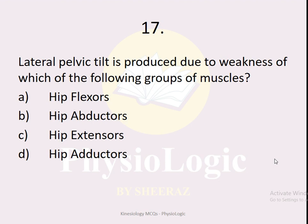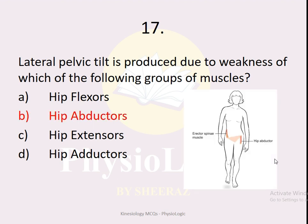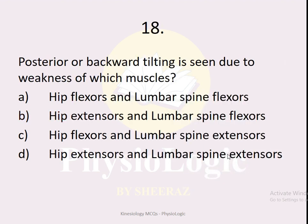MCQ number seventeen: lateral pelvic tilt is produced due to the weakness of which group of muscles — hip flexors, hip abductors, hip extensors, or hip adductors? The correct option is hip abductors. These muscles are attached to the side of the pelvis. If they are weak and the person is standing on one leg, the pelvis drops down, producing lateral pelvic tilt.